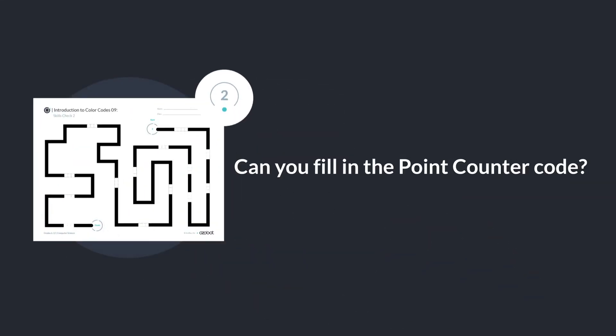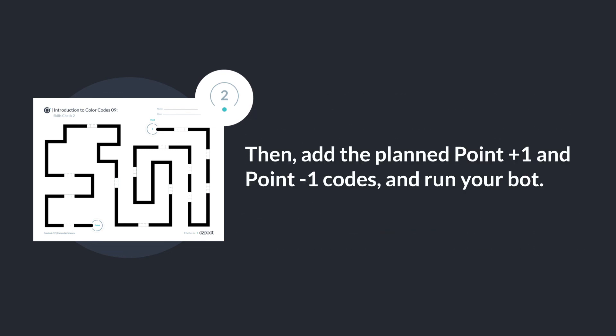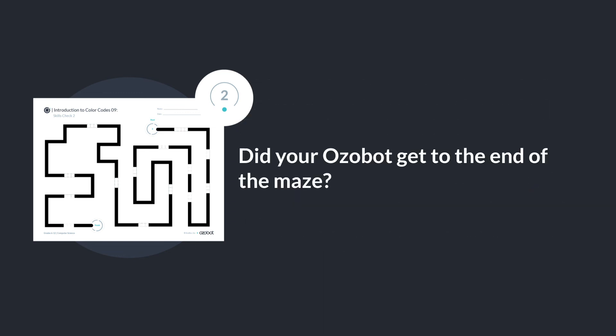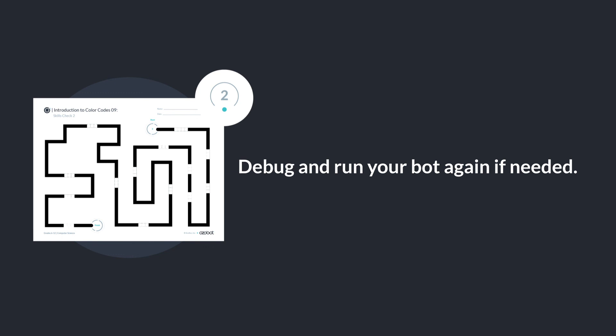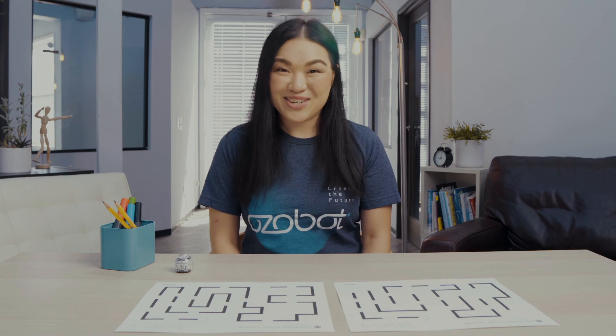Can you fill in the point counter code? Then add the planned point plus one and point minus one codes and run your bot. Did your Ozobot get to the end of the maze? Debug and run your bot again if needed. Have fun and see you again soon.